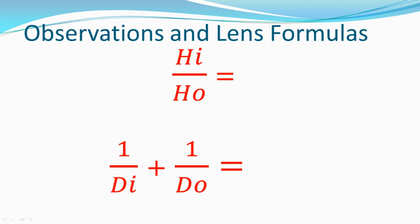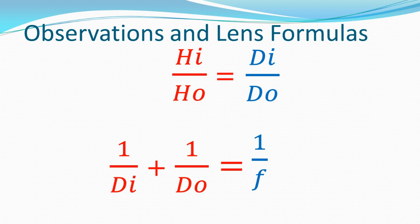So based on our observations, we know that the ratio of hi-to-ho — the height of the image to the height of the object — is always equal to the ratio of the distance of the image to the distance of the object. The inverse of the distance of the image plus the inverse of the distance of the object gives us 1/f, the inverse of the focal length.